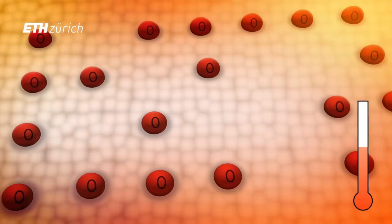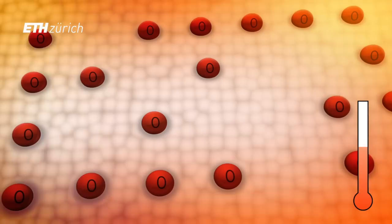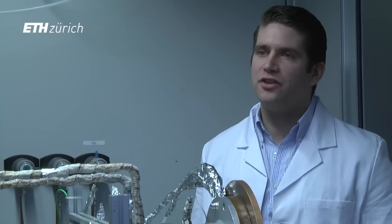In a second step, which takes place at around 900 degrees, we provide CO2 and water, and syngas, a mixture of hydrogen and carbon monoxide, is produced.